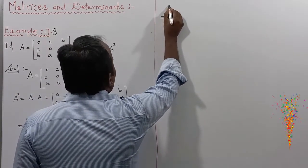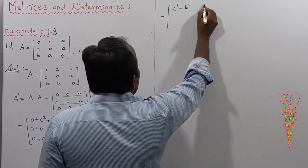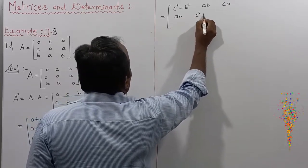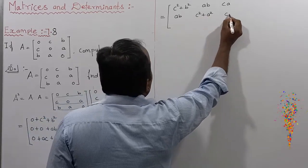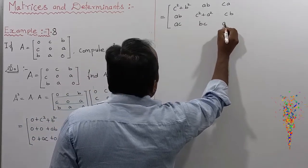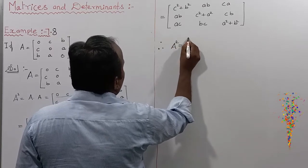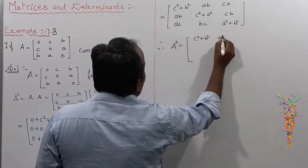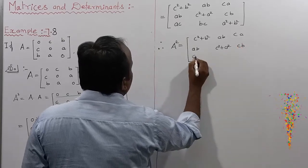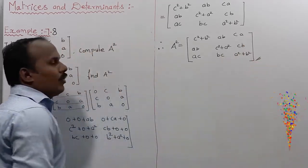Therefore, A squared equals the matrix: first row [c²+b², ab, ca], second row [ab, c²+a², cb], third row [ac, bc, a²+b²]. That is the solution for A squared.